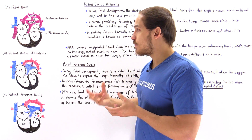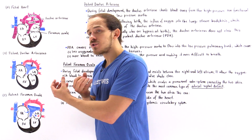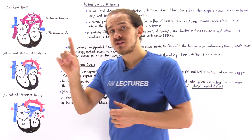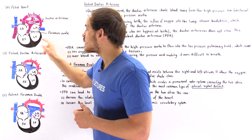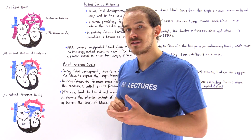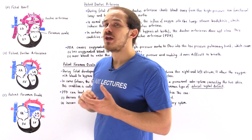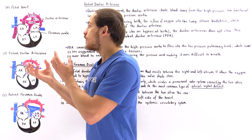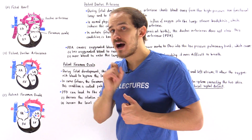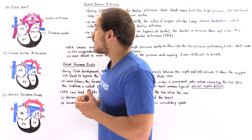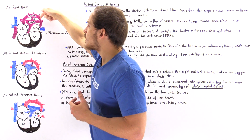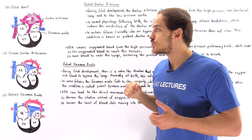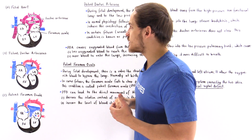At birth, a reversal in pressure takes place. Before birth, the right side of the heart was at higher pressure than the left side, meaning the pulmonary system was at higher pressure than the systemic circulatory system. After birth, the left side is at higher pressure than the right side, meaning the systemic circulatory system — inside the aorta — now has higher pressure than the pulmonary circulatory system.